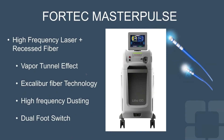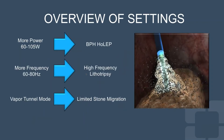Fortec now has the MasterPulse system, which uses a proprietary technology known as vapor tunnel. This is also a high-frequency laser that uses a recessed fiber, and its main feature is the vapor tunnel effect, enabling high-frequency dusting. The machine allows high power ranging from 60 to 105 watts, useful for BPH especially with HoLEP. It can generate high frequencies up to 80 hertz for high-frequency lithotripsy, and the vapor tunnel mode, similar to MOSES, controls stone migration while delivering adequate impact.